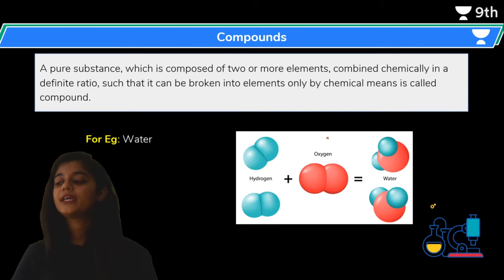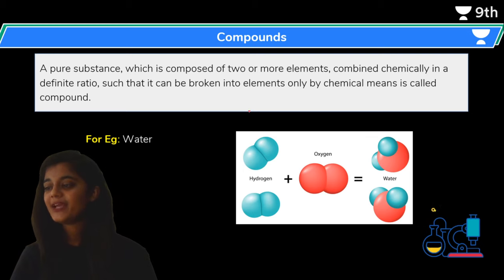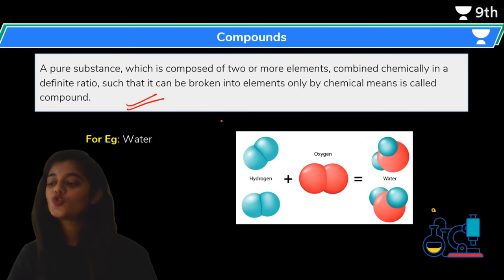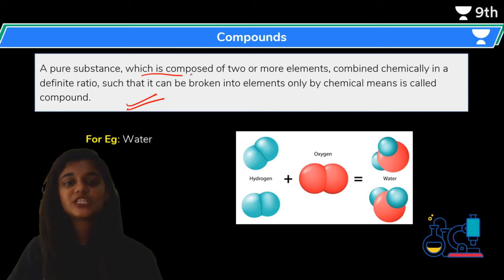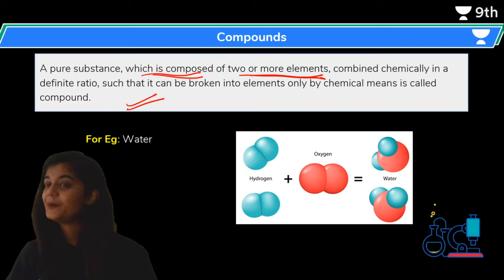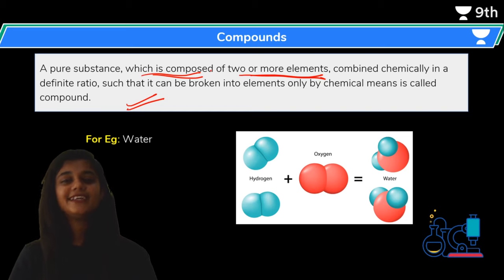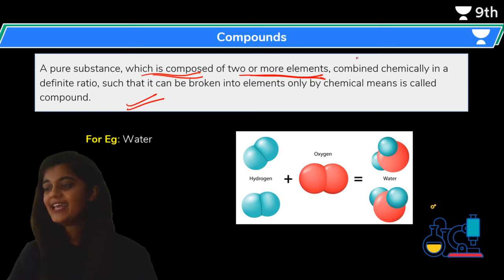Today we will discuss what are compounds. Pure substances, if you remember, we divided into two categories: the first category was elements and the second category was compounds. So what are compounds? A compound is also a type of pure substance which is composed of two or more elements. Elements means only one type of atom, but in a compound there is more than one type of element.